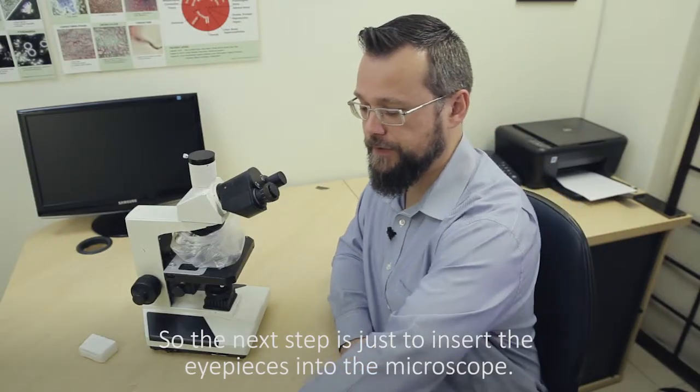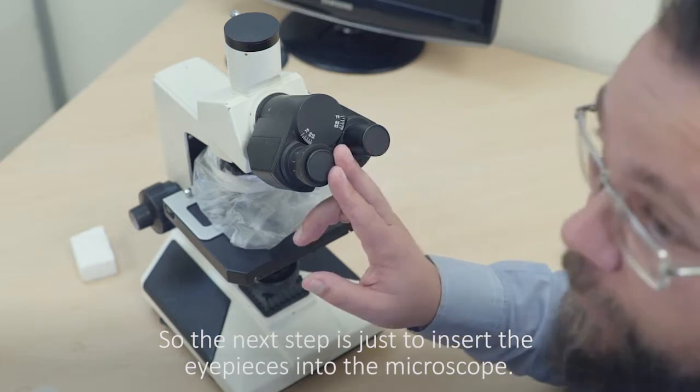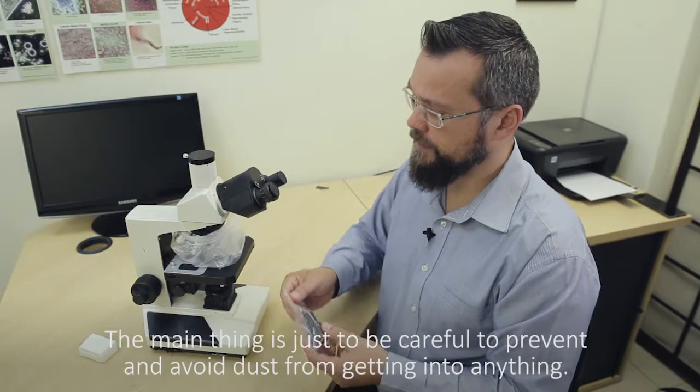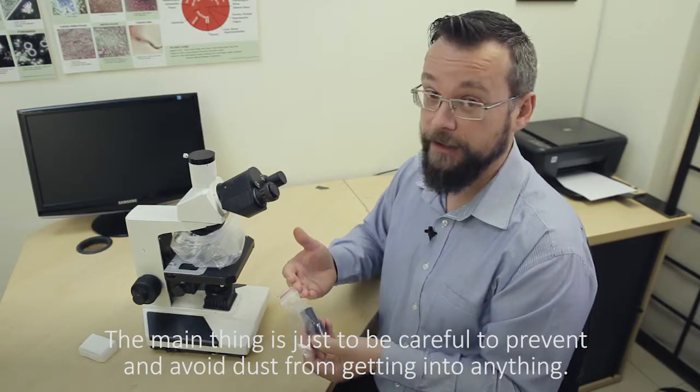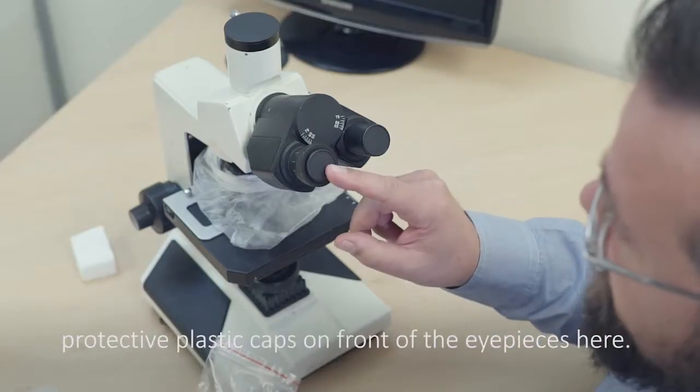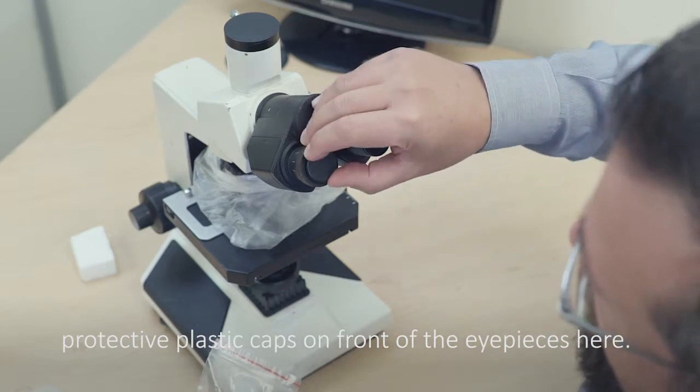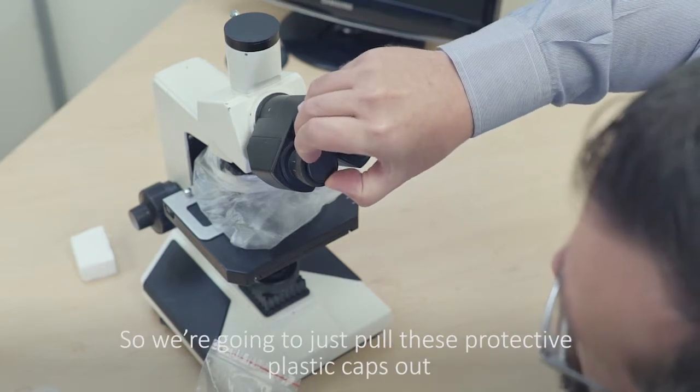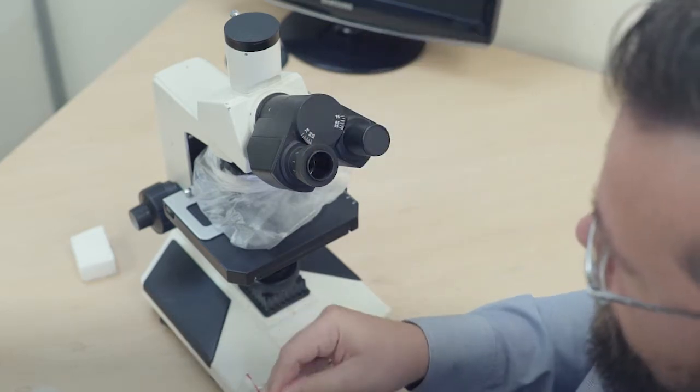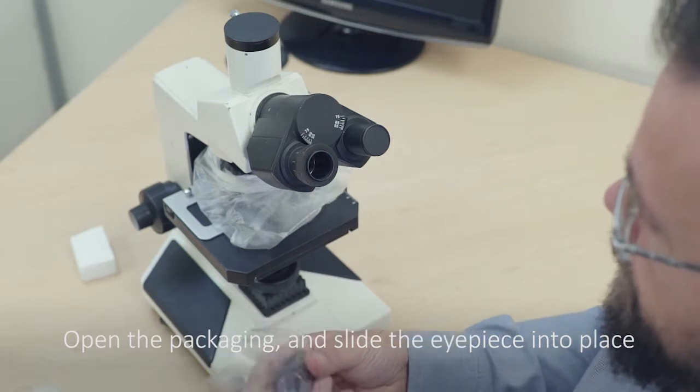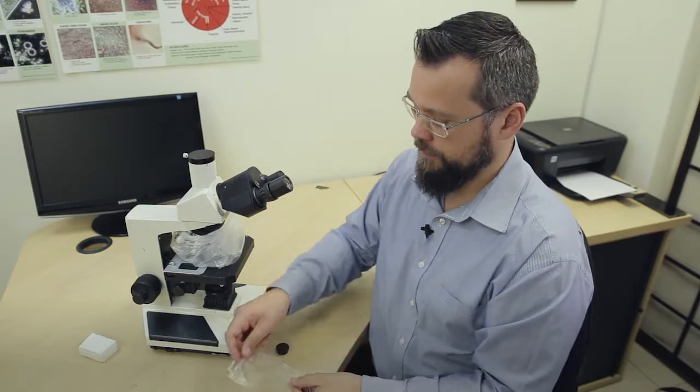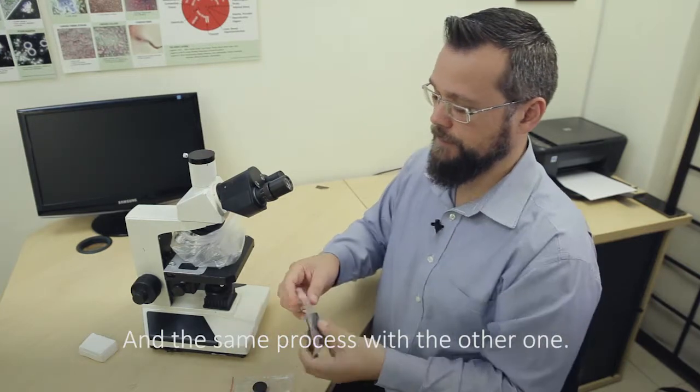So the next step is just to insert the eyepieces into the microscope and this is quite simple. They really just slide into place. The main thing is just to be careful to prevent and avoid dust from getting into anything here. That's why they're still sealed in the packaging and there are protective plastic caps on the front of the eyepieces here. So we're going to just pull these protective caps out, open the packaging and slide the eyepiece into place, and the same process with the other one.